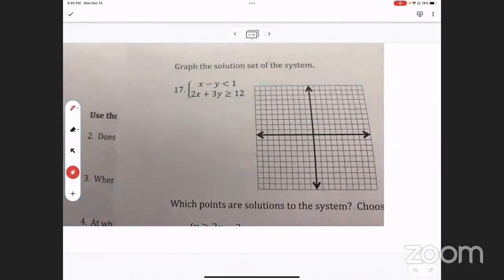Graph the solution set of the system. Notice this is a system of inequalities. I'm going to tell you right now the easiest way to graph this when it's in standard form like this is to find the intercepts. So find your two intercepts, which means plug in zero for x and then plug in zero for y and solve for the other one.